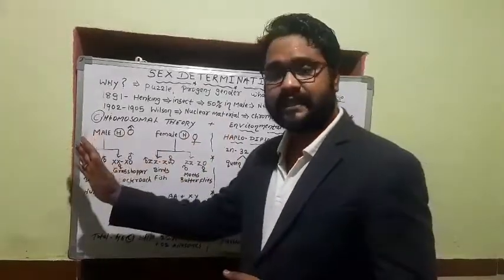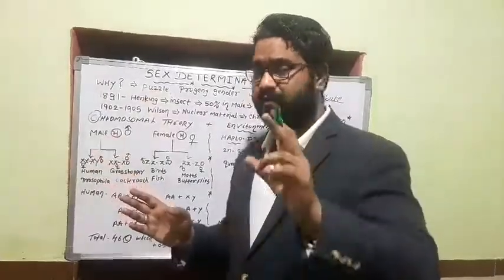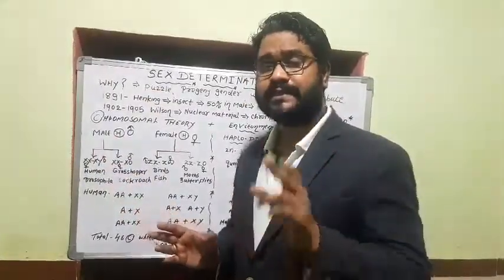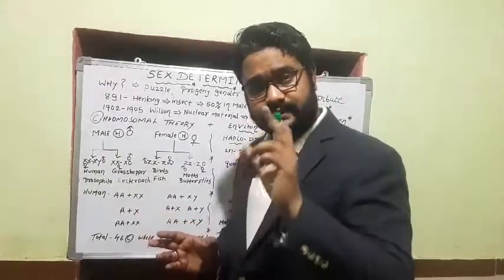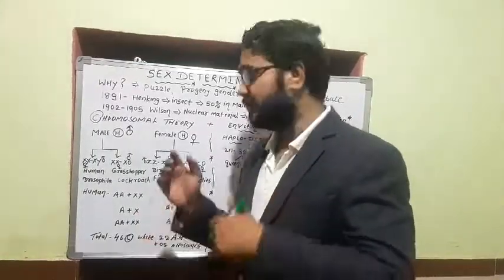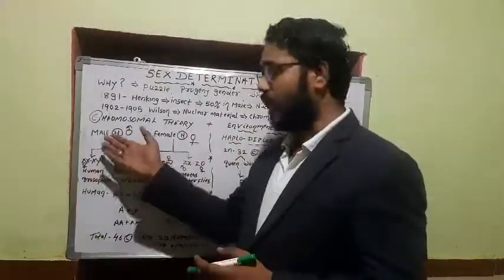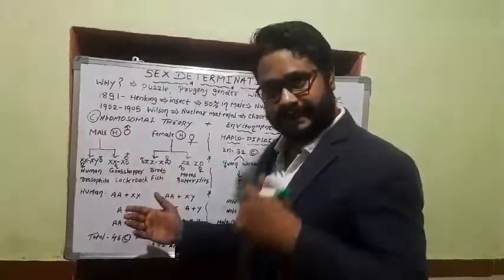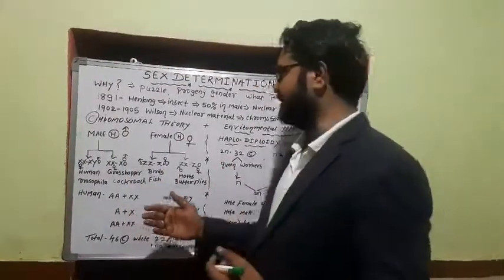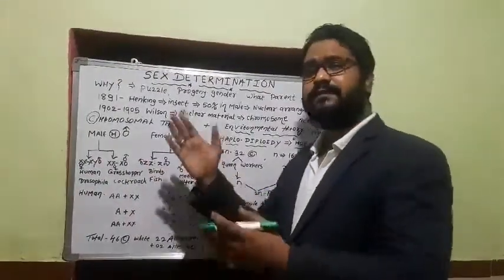In male heterogamy, the male parent decides the gender of offspring. In the XY system, the male is heterogametic — producing two types of gametes. This happens through simple Mendelian inheritance, which we will now examine.